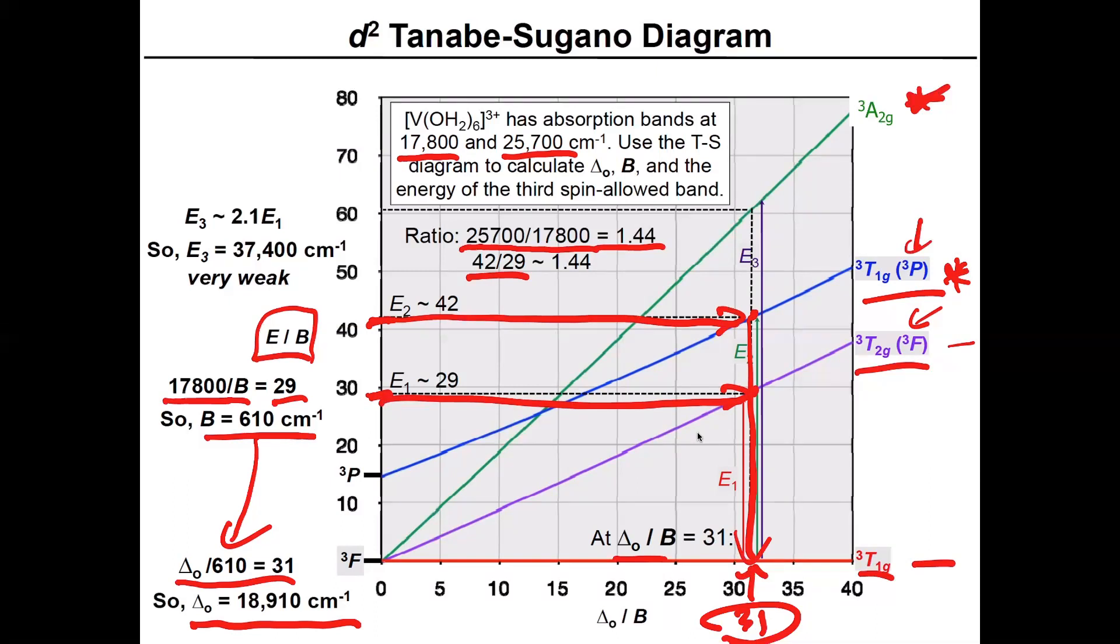And then as a result of this, because we know that this is happening at 31, if we were able to observe a third transition, it would actually still be here at 31. And then we can run this over to here as well. But all we need to know is that we know about where that should be in terms of energy. And as long as we know the fact that B is 610, we can then calculate everything we need to know using the number on the Y axis. And that would tell us that we expect that the third transition would be about 37,400 wave numbers.